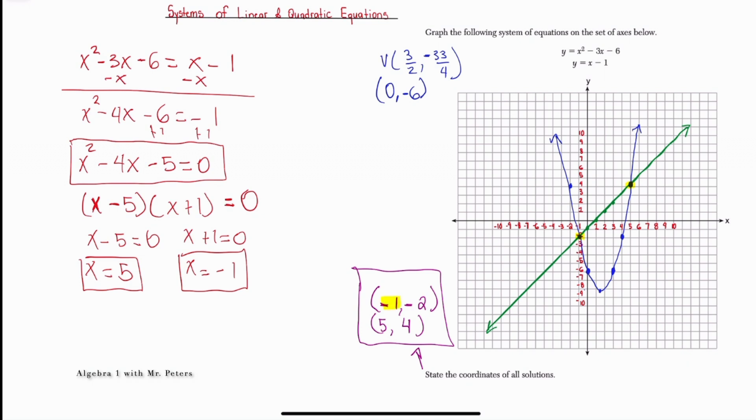Now if you look at the x values we have, here goes negative 1, here goes positive 5. Now you're going to say to me, Peters, where did they get the negative 2 and the 4? So let's erase this right here in blue, and I'm going to show you how. And remember, plug it into the easier equation. So we go over to the linear equation, y is equal to x minus 1. So y is equal to negative 1 minus 1. Y is equal to negative 2. So when x is negative 1, y is negative 2. There goes our first solution, aka point of intersection.